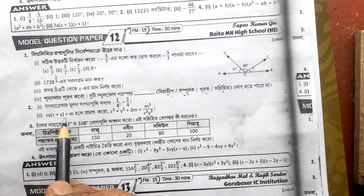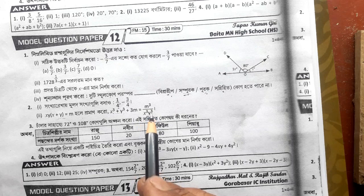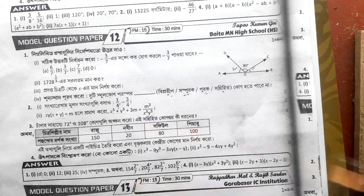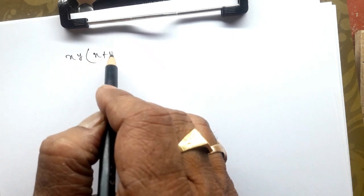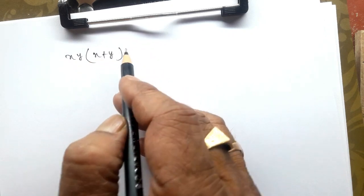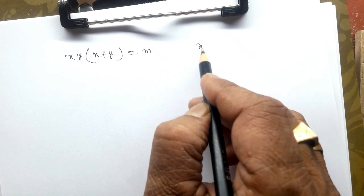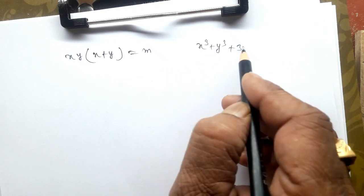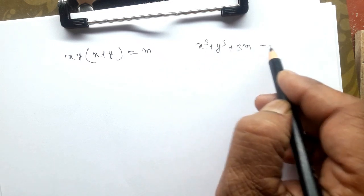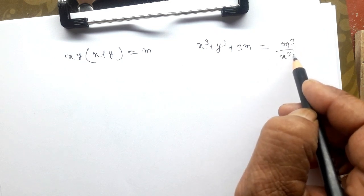This is very easy to calculate. xy into x plus y equals m. I will write x³ plus y³ plus 3n, so m³ by x³ by y³. So j xy into x plus y equals m, and we will write x³ plus y³ plus 3n, so m³ by x³ by y³.